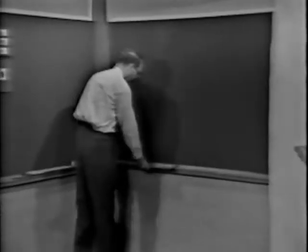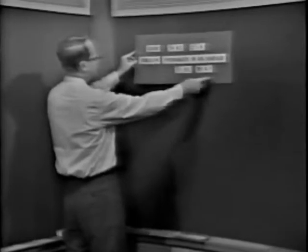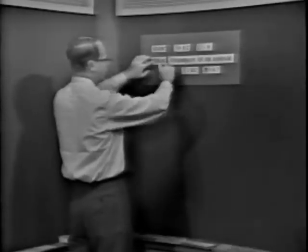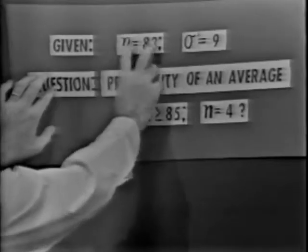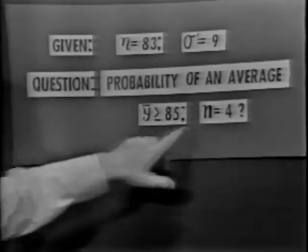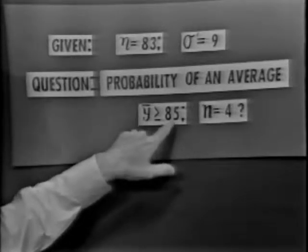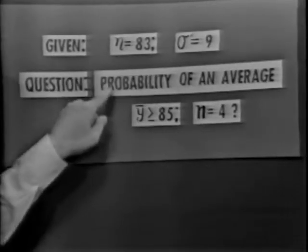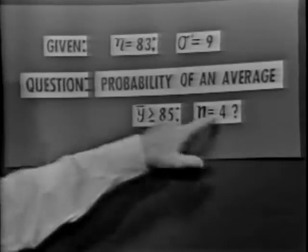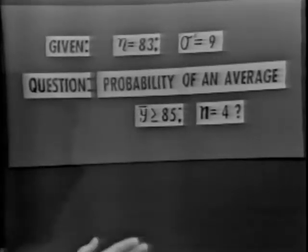Now maybe our best bet is to try to fix all this with a numerical example. Let's imagine that we're taking observations from a distribution and that its mean is 83 and that the distribution has a variance of 9. I don't know the name of the distribution, I don't know its shape, and I don't even know if it's discrete. We have no other information save the mean and the variance. We've taken four observations and determined that the average is 85. Now comes the question: what's the probability that we can get an average of 85 from observations drawn from this parent distribution?